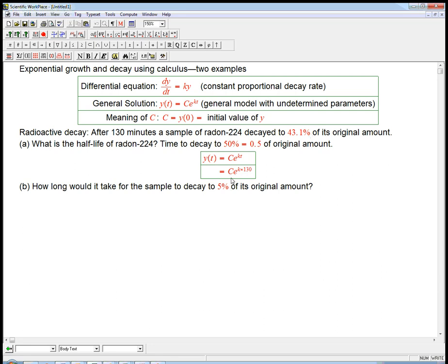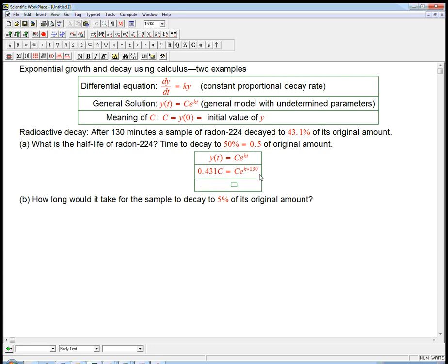It went down to 43.1% of its original amount. 43.1% is 0.431 times the original amount. But guess what? That's C. Remember, original amount is just exactly the initial value of y. That's C. So there's a C on both sides. So when you say of its original amount, we're already talking about growth or decay factors. This is really the ratio. The 0.431 is the ratio. That's always the situation where the Cs are going to cancel when we focus on the ratio. So the Cs cancel out.